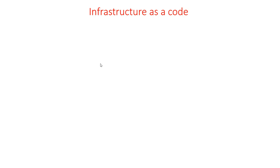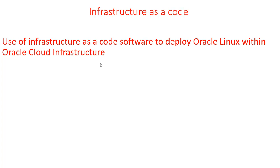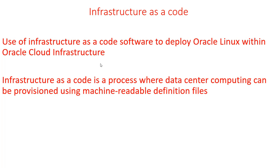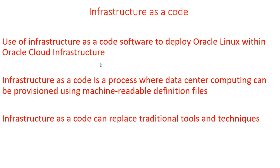We are going to talk about infrastructure as code. We've already talked about that for Terraform, and now we are going to look into Chef. It's used as infrastructure as code software to deploy Oracle Linux with Oracle Cloud Infrastructure. It's not only for Oracle Cloud — it works with most cloud infrastructure. Infrastructure as code is a process where data center computing can be provisioned using machine-readable definition files.